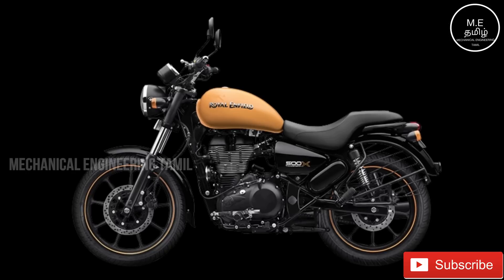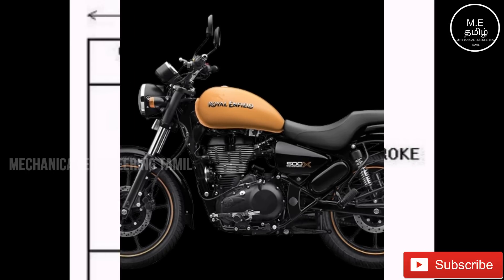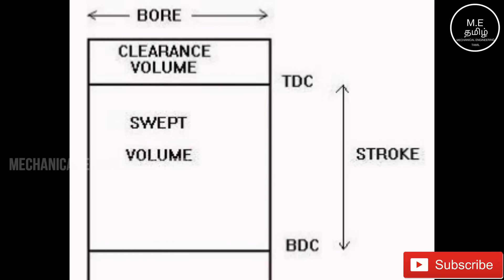Let me tell you what CC is and how it works. CC describes cubic centimeter or cubic capacity. In an engine, there are cylinders and we can have a piston at the top and bottom of a cylinder. The top position is TDC — the top dead center — and the bottom position is BDC, the bottom dead center. The volume between TDC and BDC is the CC.